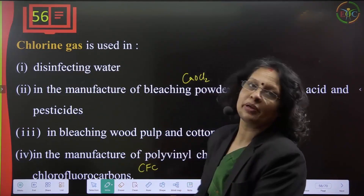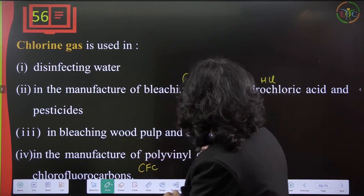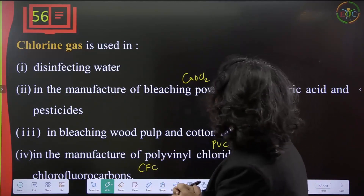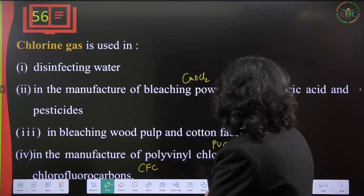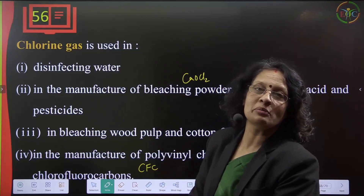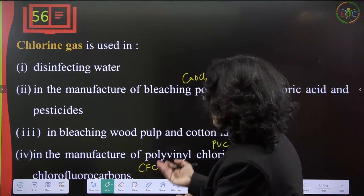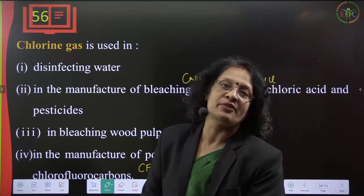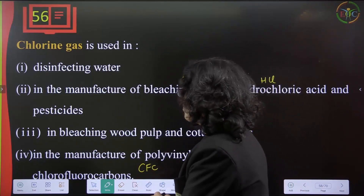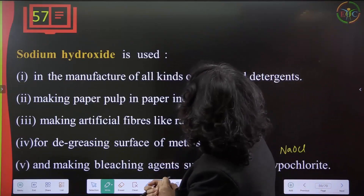Chlorine is used for bleaching wood pulp and cotton fabric. It is also used in the manufacturing of polyvinyl chloride (PVC), which is used in pipes, and in chlorofluorocarbons (CFCs), which have extensive applications.